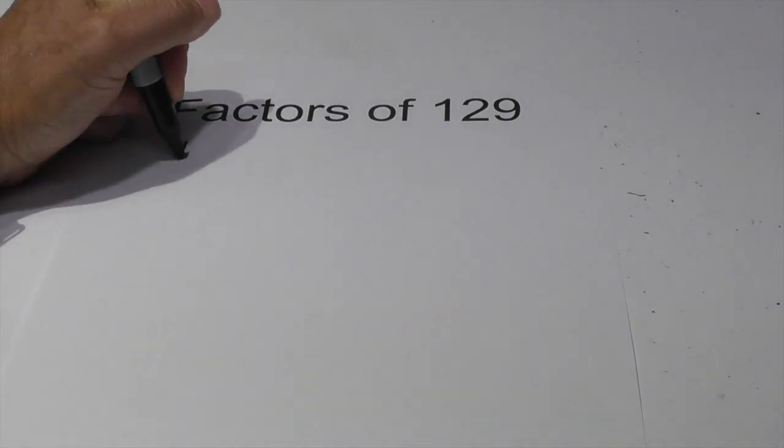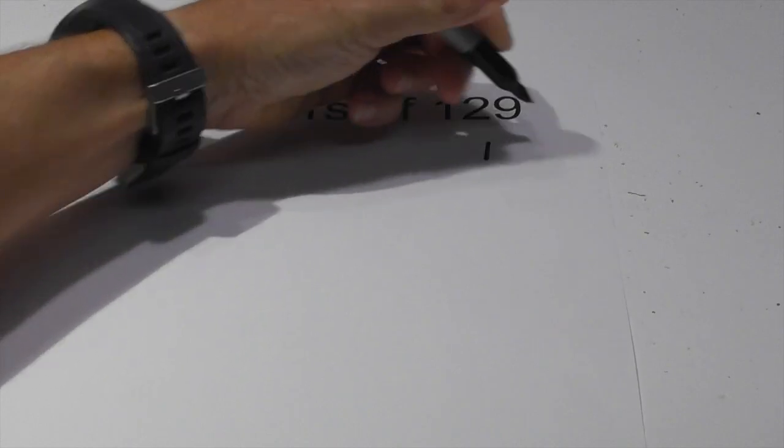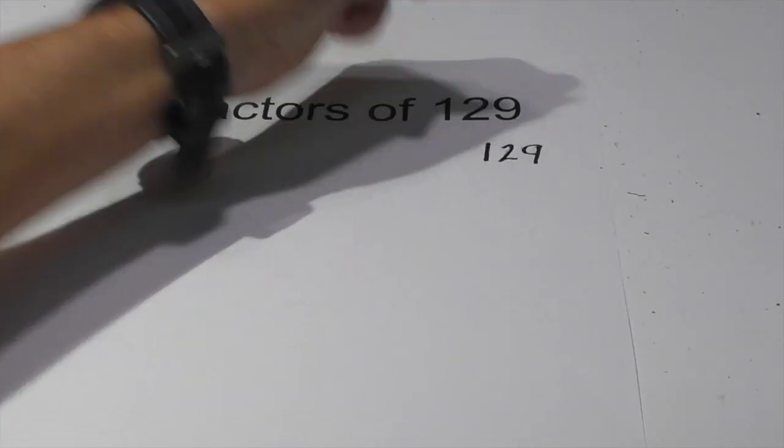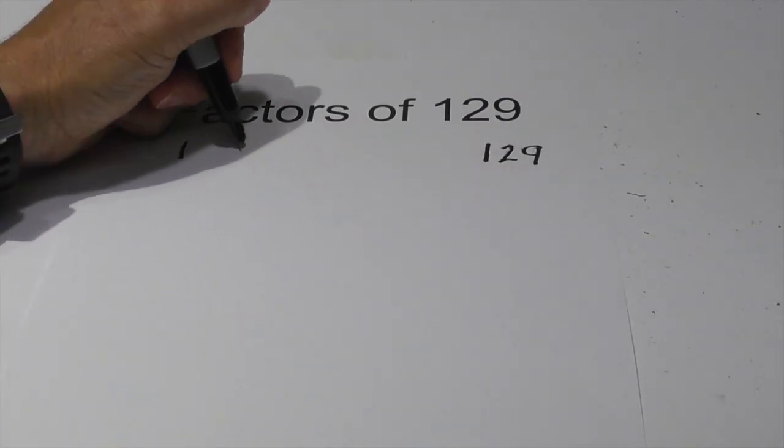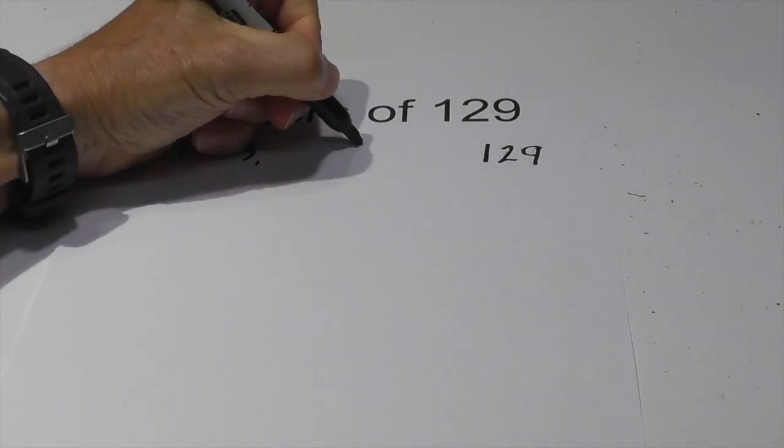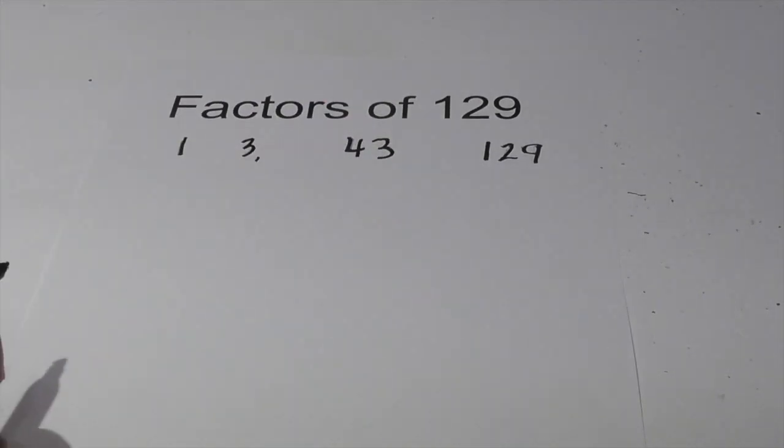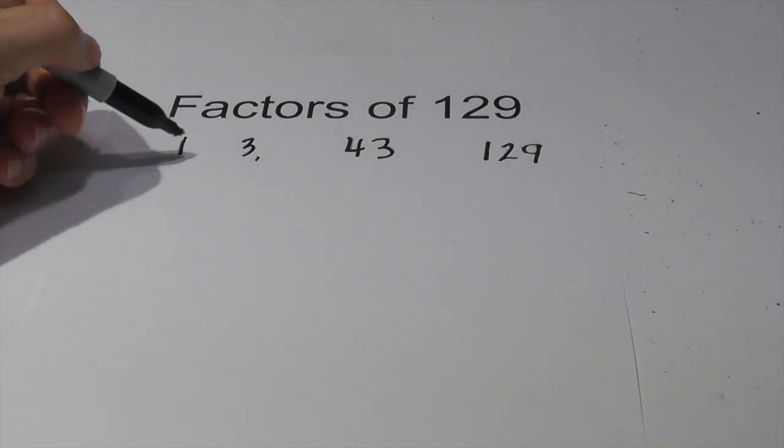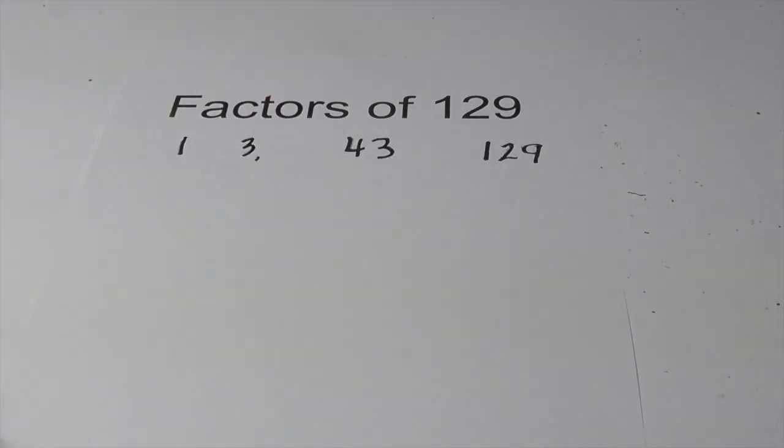So let's begin with 1 times 129 and next we have 3 times 43 and that's all your factors. So it's 1, 3, 43, and 129.